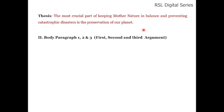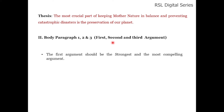Now we go to the body paragraphs. In body paragraphs, we have three different paragraphs. The rule is the same for all of them. The first argument should be the strongest and most compelling one. For example, if you have taken air pollution as your topic, you have to discuss what is the major reason or main cause for that air pollution — that is the first argument.